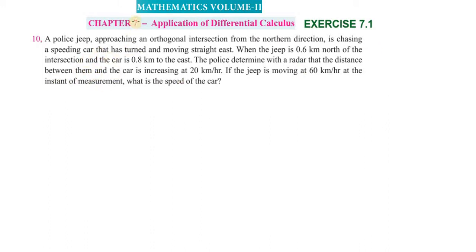Hi students, greetings from Succession Academy. 12th Maths Volume 2, Chapter 7, Exercise 7.1, Question Number 10. A police jeep approaching an orthogonal intersection from the north direction. Orthogonal intersection means the jeep can go either east or west from the north.